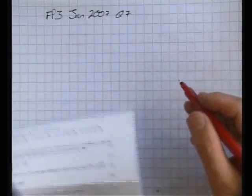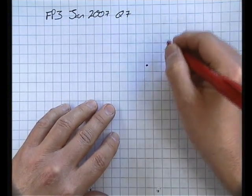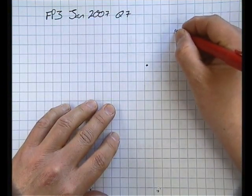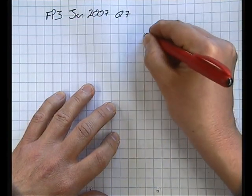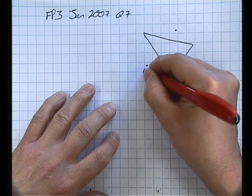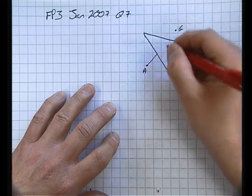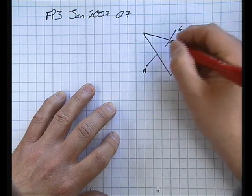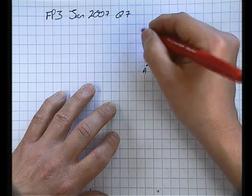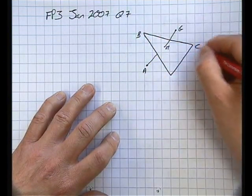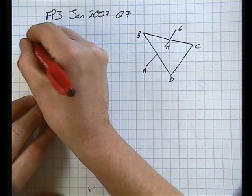First thing I did was draw myself a little bit of a sketch here to get an idea of what's going on. I don't really know where these positions are, but this will at least help me think about it. Part i: the vector equation of the line through A and G.